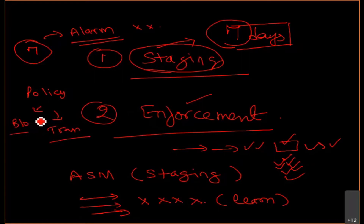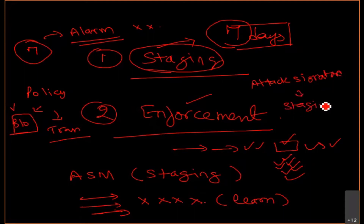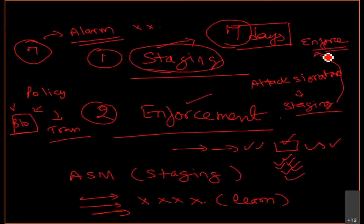If you want to get a request blocked that is matching some attack signature, first you need to put your policy under blocking mode. Second, all of your attack signatures are by default under staging. Remember when I was creating the policy I was showing you it is under staging — you need to enforce them. Enforce means that if any request is triggering this attack signature, the request may be blocked.